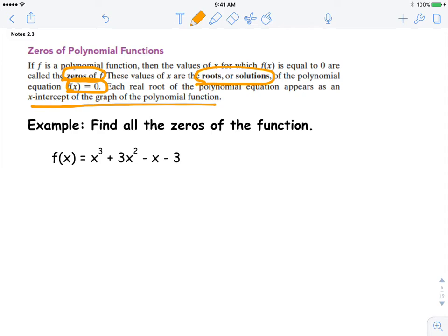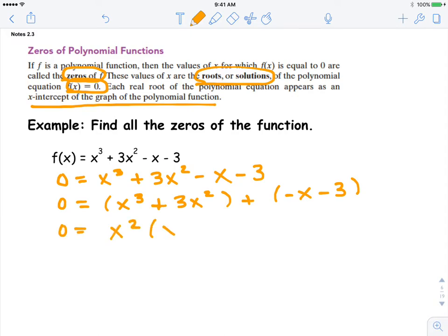So we're going to go ahead and work with our example here. We're going to set the function equal to zero and then we're going to solve it for x. So we're going to try and factor this. We're going to group it because it's four terms. We're going to take out the greatest common factor of the first group, which is x squared. We're going to take out the GCF of the second group, which is negative one.